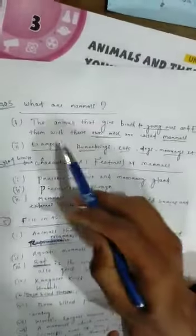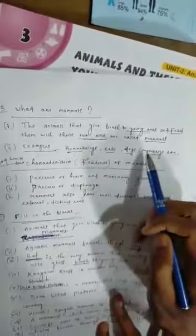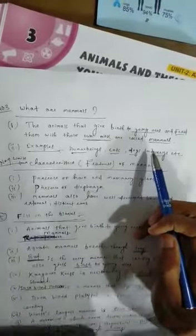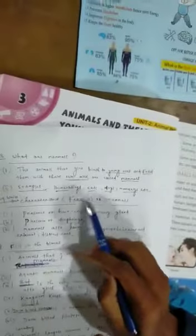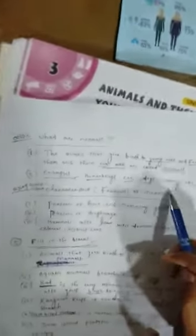Question number three: What are mammals? The animals that give birth to young ones and feed them with their own milk are called mammals. Examples: human beings, cats, dogs, monkeys, etc.